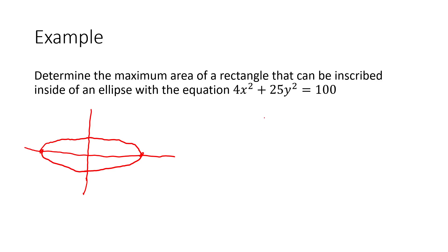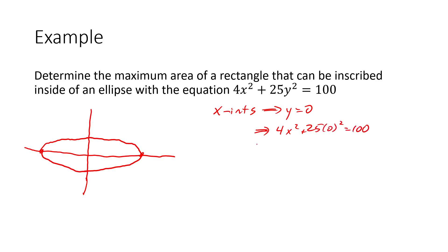Just remember that if you get an ellipse question in this course, it'll be centered at the origin, and your job will basically be to determine the intercepts. We know that x-intercepts occur when y is equal to 0. So in this case, that would mean 4x² plus 25 times 0² equals 100, so 4x² equals 100, x² equals 25, x equals plus or minus 5. So we have x-intercepts at (5, 0) and (−5, 0).